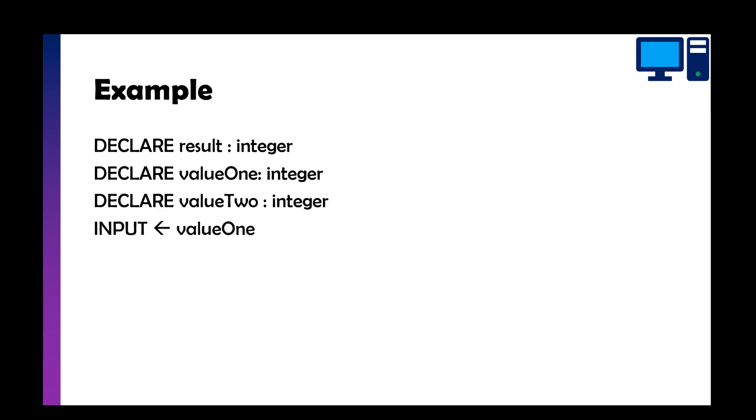So here's an example of some pseudocode. So we've got three variables that we've declared. We've got result which is an integer, value one and value two which are integers. So we get an input from probably a human saying input value one, input value two, and then we then assign the value of value one plus value two and we put that in result, store it, and then output to the user. So this is a simple program that adds up two numbers and that's about it.